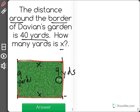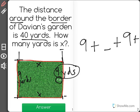So what we have here so far is we have 9 yards this side plus a blank side plus 9 yards plus the same blank side over here. It will be the same distance, equals 40.